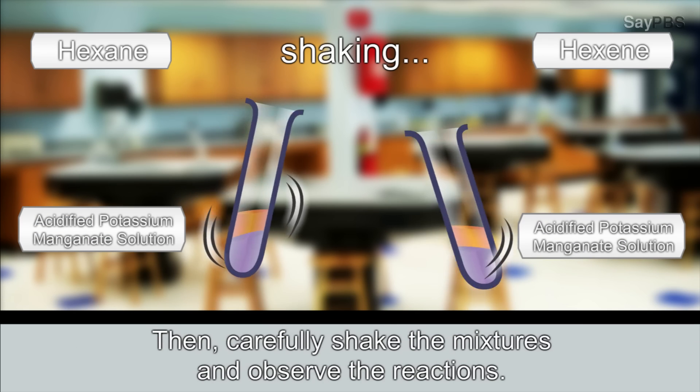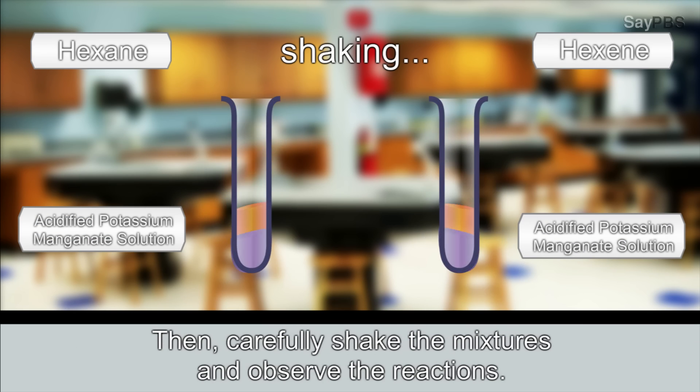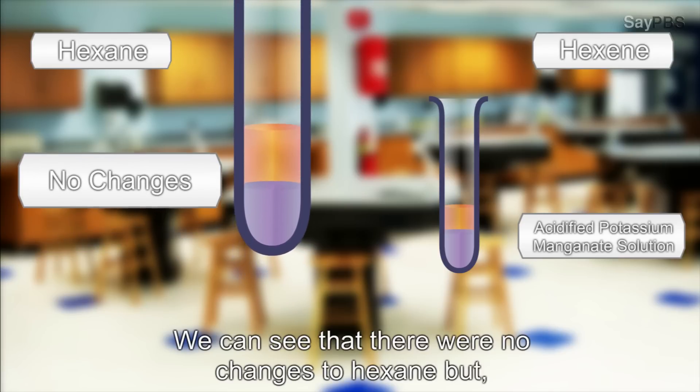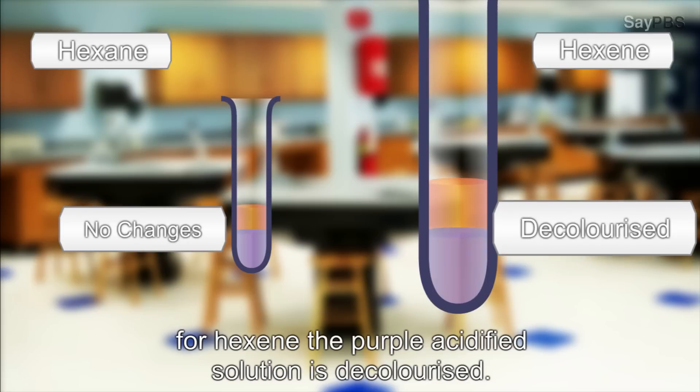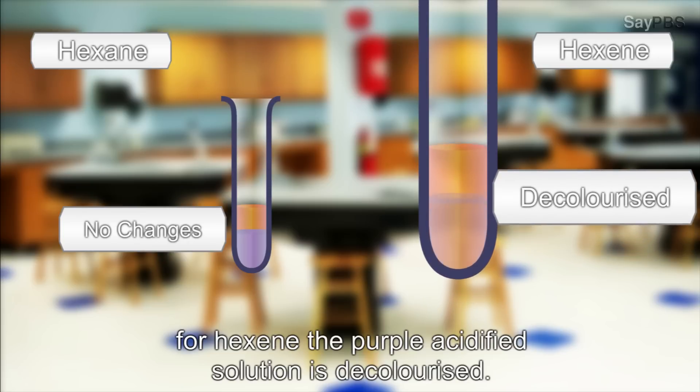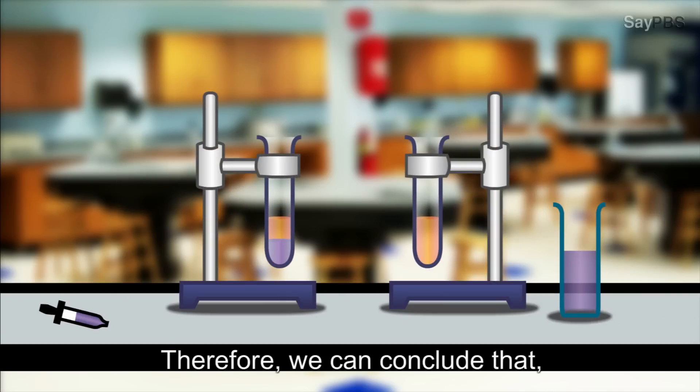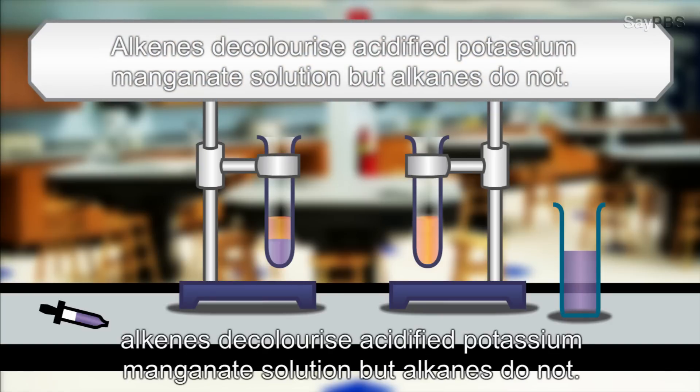Then, carefully shake the mixtures and observe the reactions. We can see that there were no changes to hexane and for hexene, the purple acidified solution is decolorized. Therefore, we can conclude that alkenes decolorize acidified potassium manganate solution but alkanes do not.